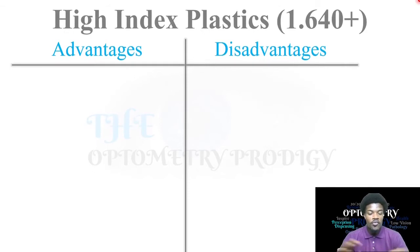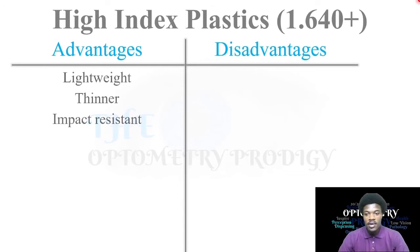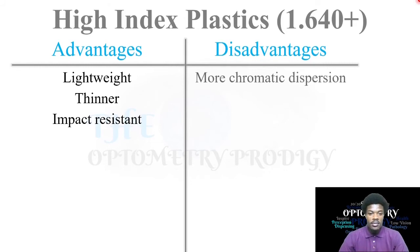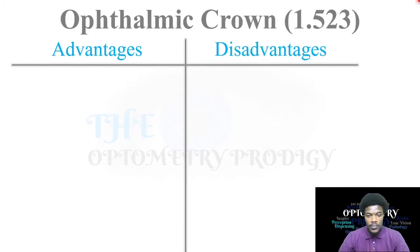High index plastics have a refractive index of 1.640 and above. The advantages are that they are lightweight, thinner, and impact resistant. However, like some other plastics, they have more chromatic dispersion.